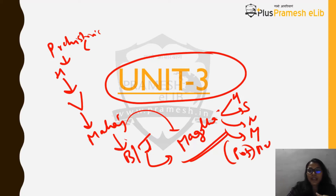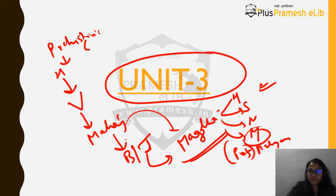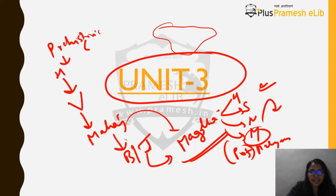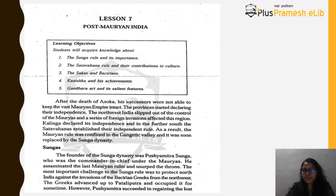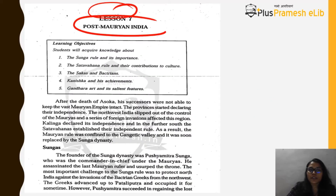Now we will study the post-Mauryan age — what happens after the Mauryas, once the last Mauryan ruler is gone. Does the empire disintegrate, or does another dynasty take over? Let's start with Lesson 7, which talks about post-Mauryan India.